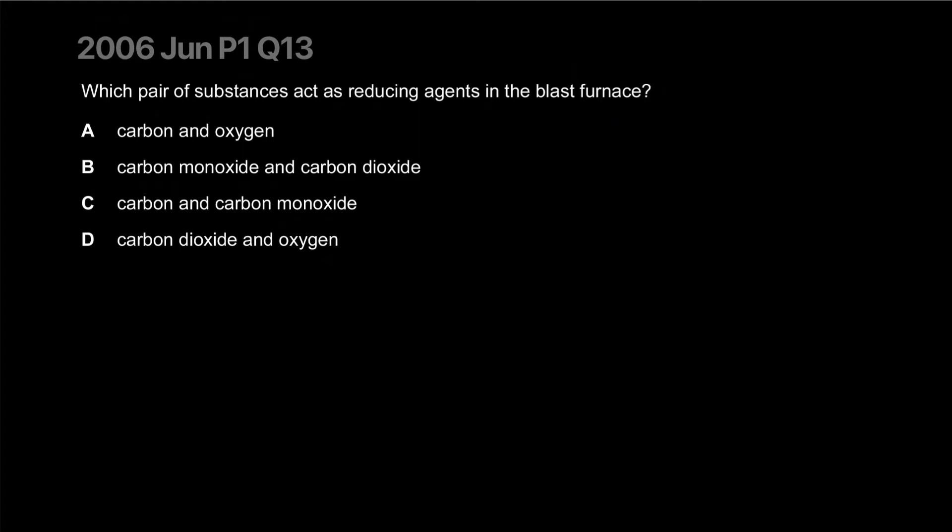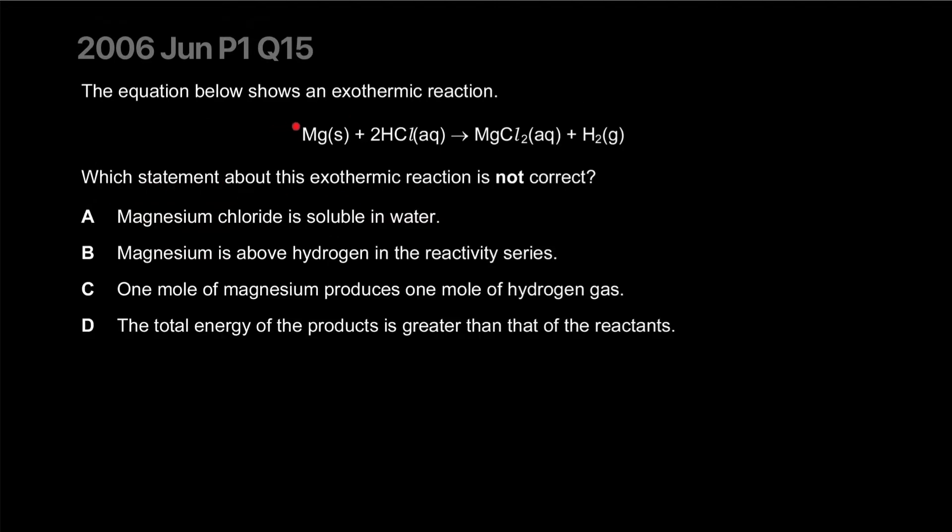Which pair of substances act as reducing agents in the blast furnace? Carbon and oxygen, no not really. Carbon monoxide and carbon dioxide, no. Carbon monoxide yes, carbon dioxide no. But carbon can react with iron oxide and carbon monoxide can react with iron to produce iron, which is a reduction reaction. So the correct answer is C. And why not A? I think I skipped over this - oxygen would be an oxidizing agent.